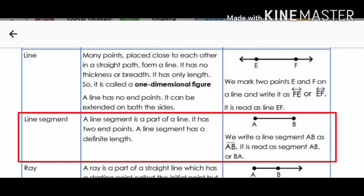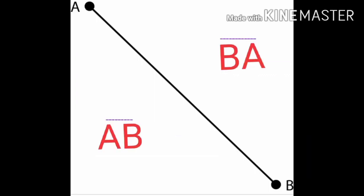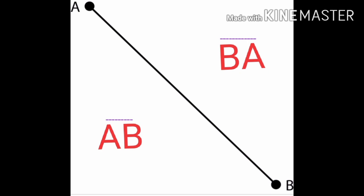Next is line segment. A line segment is a part of a line. It has two end points. A line segment has a definite length. We write a line segment AB as AB. It is read as segment AB or segment BA. Let's say this point is point A and the other end is point B. When these two are joined along a straight path, this straight path is called a line segment. It is a fixed path and it can be measured. For example, the assembly line in the morning is actually a line segment because it has two ends.